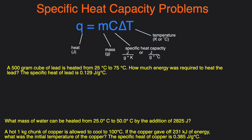Delta T is the change in temperature and that can either be in degrees Kelvin or degrees Celsius — they're interchangeable as well. To solve for change in temperature, you would take the final temperature and subtract the initial temperature. Now that you understand the equation, let's take a look at a couple of practice problems and we'll work through them together.